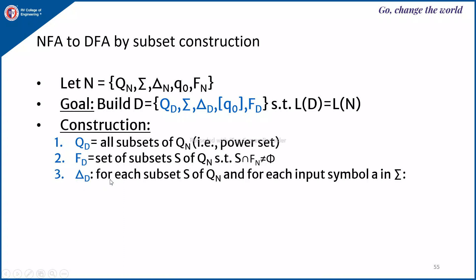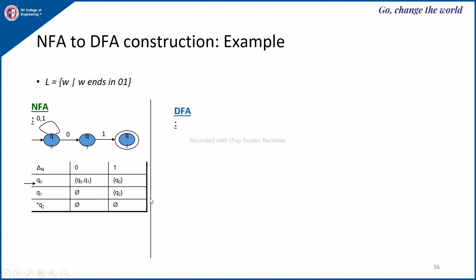To construct the delta function for the equivalent DFA: for each subset S of Qn and for each input symbol A in sigma, delta-D of S on A is equal to the union of delta-N of P on A for each P belonging to S. This means that if S is a set of states, find the NFA transitions for all those states on input symbol A and perform the union.